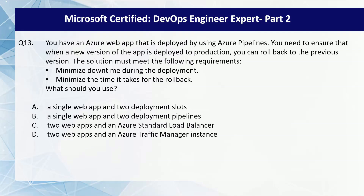You should make use of a single web app and two deployment slots. Azure deployment slots allow you to deploy a new version of your application to a staging slot while keeping the production slot running. Once the deployment is validated in the staging slot, you can quickly swap the slots to push the new version to production. If an issue is detected, you can immediately swap back to the previous version with minimal downtime. That is why option A is the correct choice. If you have any doubts, please post them in the comment section.